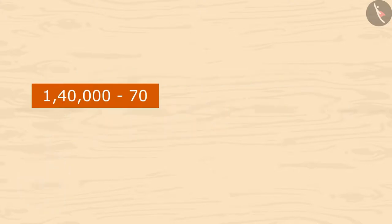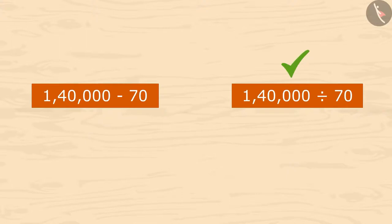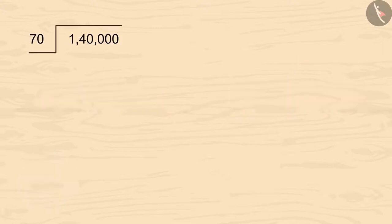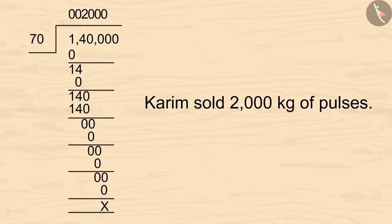Should we subtract or divide 70 by 1 lakh 40 thousand? We will divide. On dividing 1 lakh 40 thousand by 70, we get 2 thousand. So, Karim had sold 2 thousand kilograms of pulses in these 3 months.